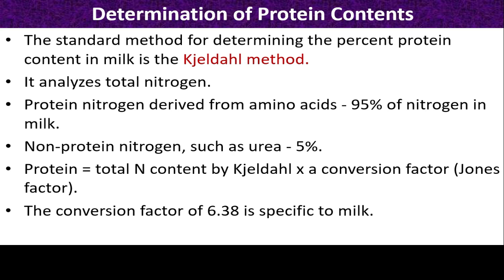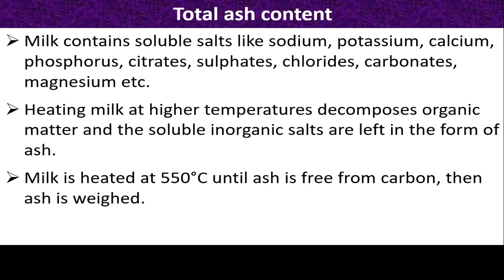Determination of protein content: the standard method is the Kjeldahl method, which analyzes total nitrogen content. Protein nitrogen derived from amino acids constitutes 95% of nitrogen in milk; non-protein nitrogen such as urea constitutes 5%. Protein content equals total nitrogen content (by Kjeldahl method) multiplied by a conversion factor known as Jones' factor, which is 6.38 specifically for milk.